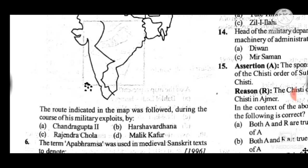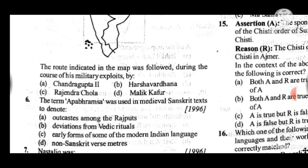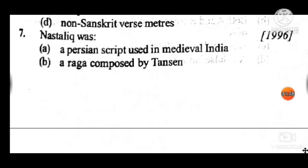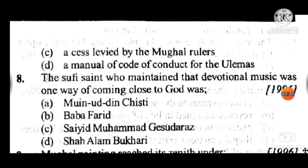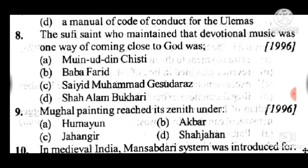Question 6: The term 'Apabhramsha' was used in medieval Sanskrit texts to denote — answer is C, early forms of some modern Indian languages. Question 7: 'Naskh' was — answer is A, a script used in medieval India. Question 8: The Sufi saint who maintained that devotional music was one way of coming close to God was — answer is A, Moinuddin Chishti. Question 9: Mughal painting reached its zenith under — answer is C, Jahangir.